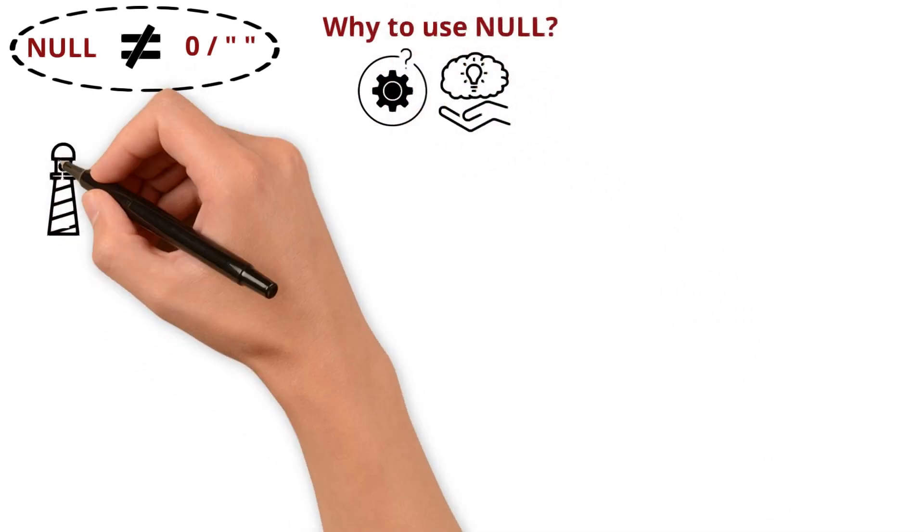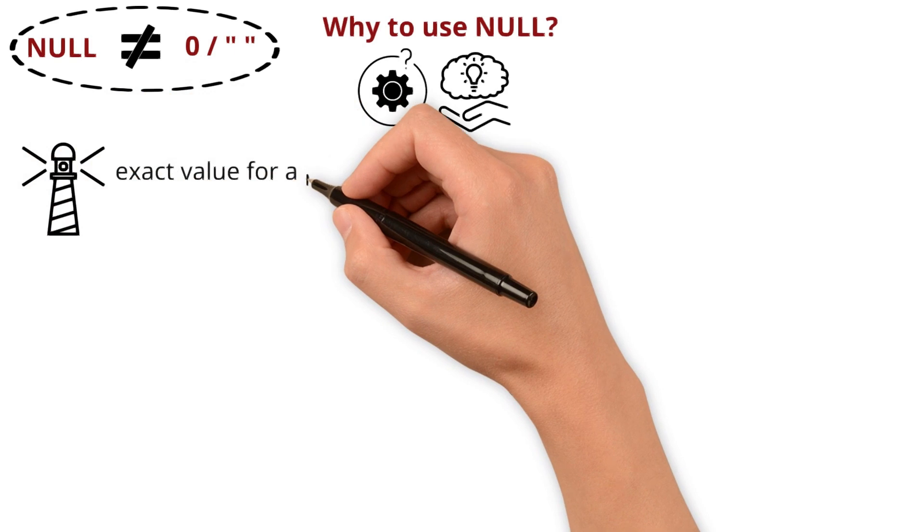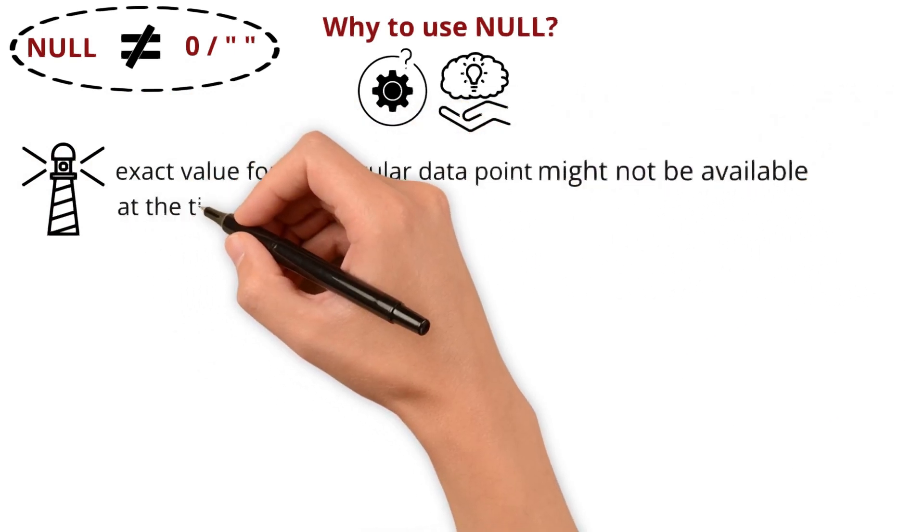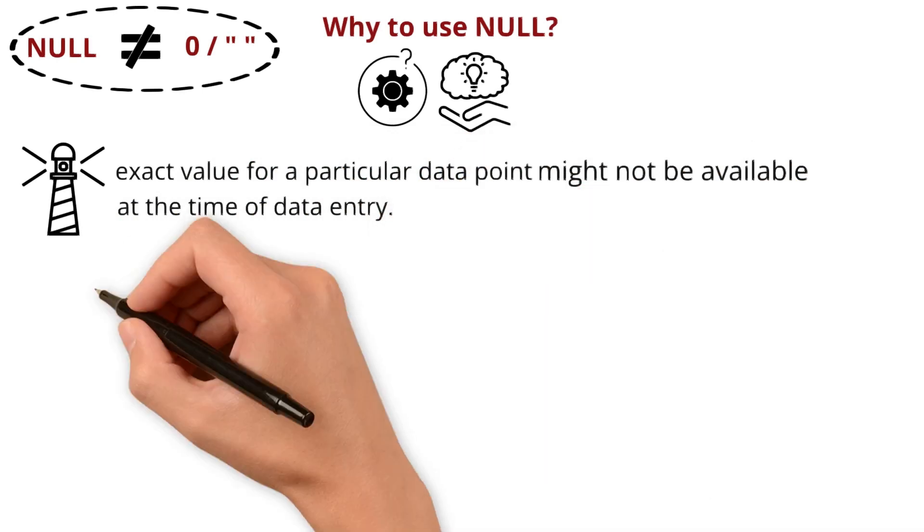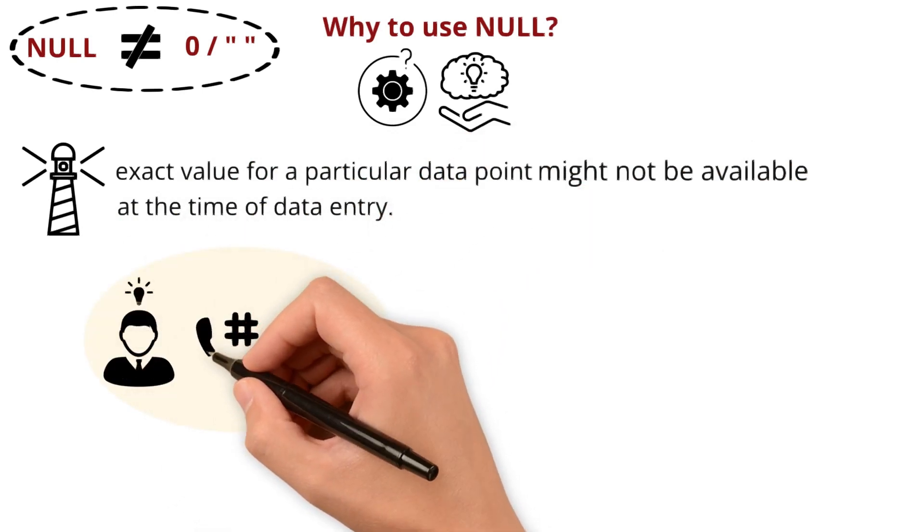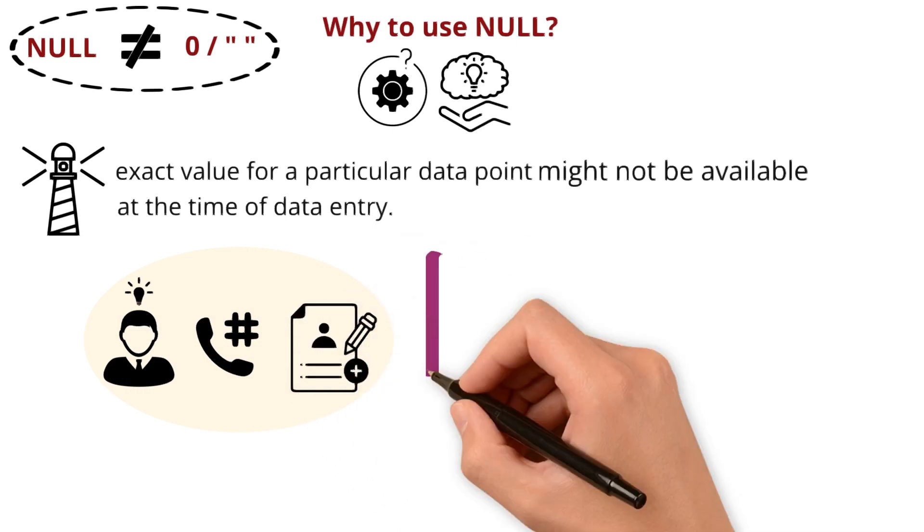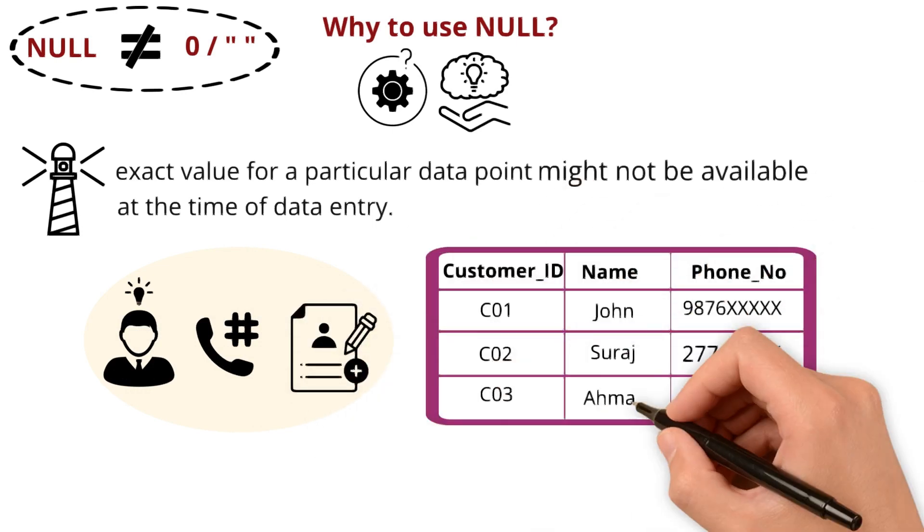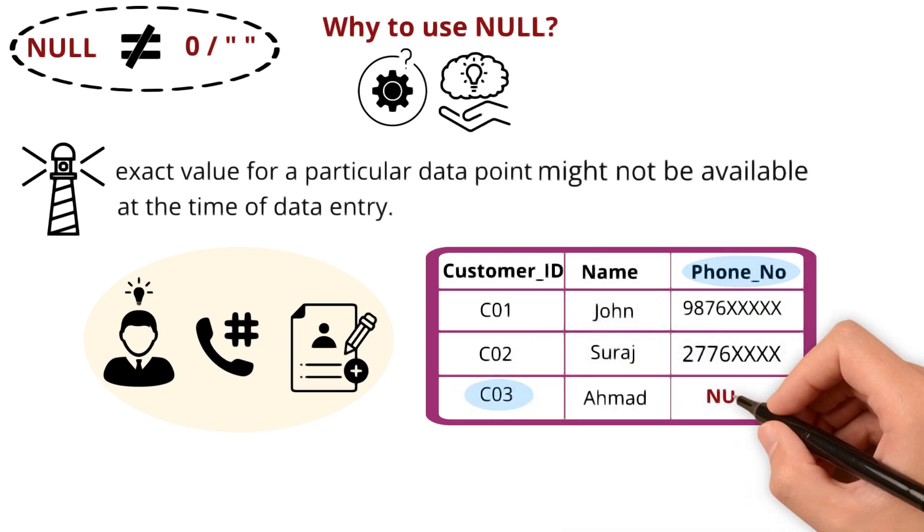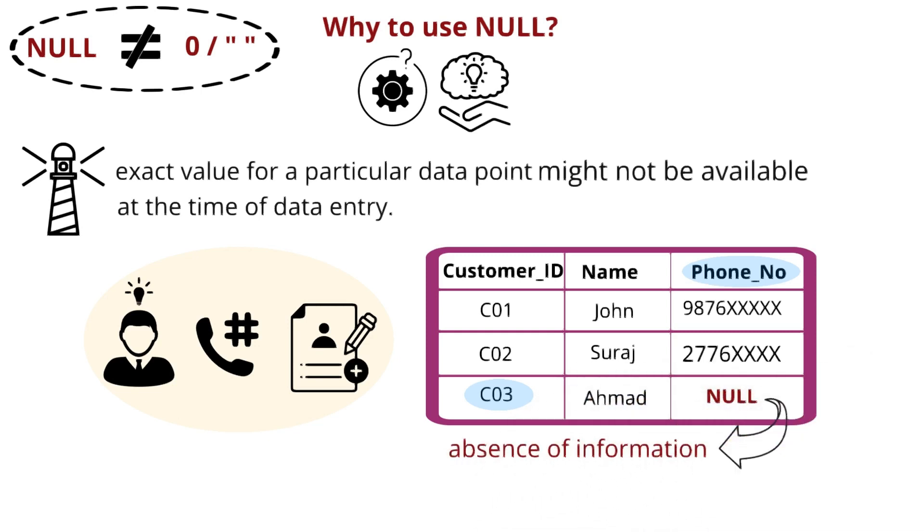There can be situations where the exact value for a particular data point might not be available at the time of data entry. For instance, a new customer might not provide their phone number during the initial registration. In this case, the phone number column for that customer record would be populated with null. Null allows you to represent the absence of information without leaving the field completely blank.